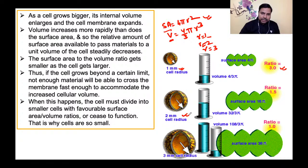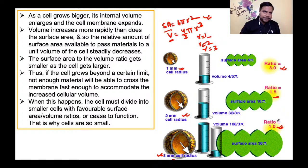r=2 पर ratio घटकर 1.5 आता है, r=3 पर ratio फिर घटकर 1 के आसपास आ जाता है। इससे हम कुछ निष्कर्ष निकाल सकते हैं।